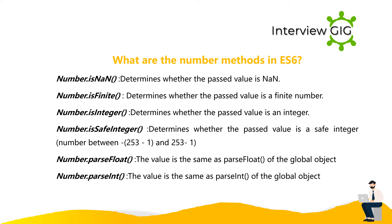What are the number methods in ES6? Number.isNaN — determines whether the passed value is NaN. Number.isFinite — determines whether the passed value is a finite number. Number.isInteger — determines whether the passed value is an integer. Number.isSafeInteger — determines whether the passed value is a safe integer, i.e., a number between -(2^53 - 1) and 2^53 - 1. Number.parseFloat — the value is the same as parseFloat of the global object. Number.parseInt — the value is the same as parseInt of the global object.